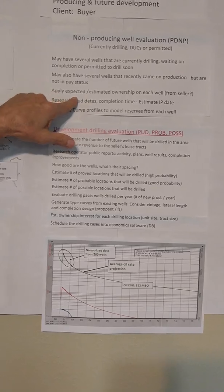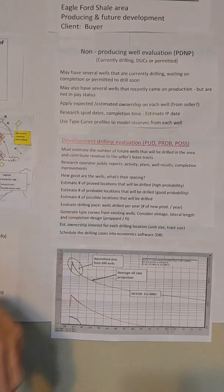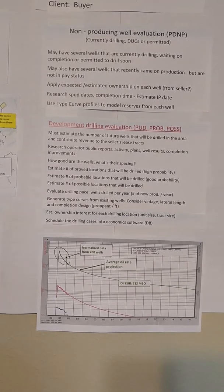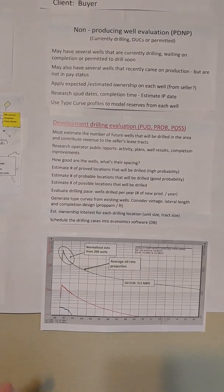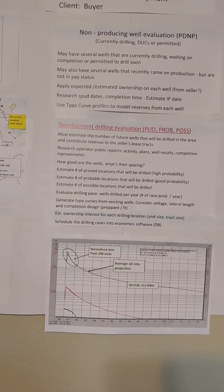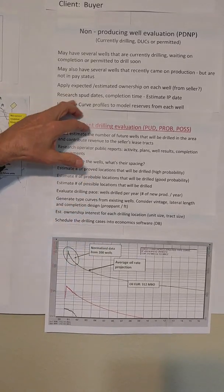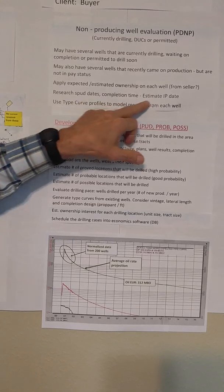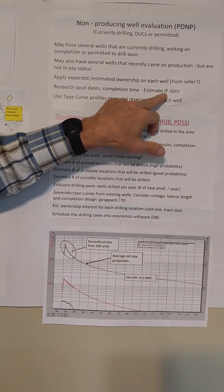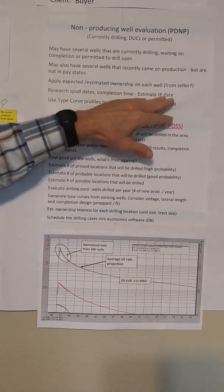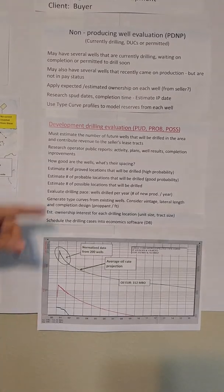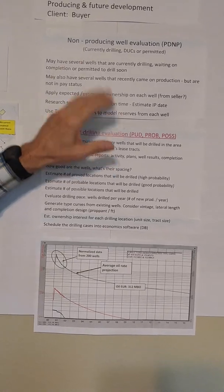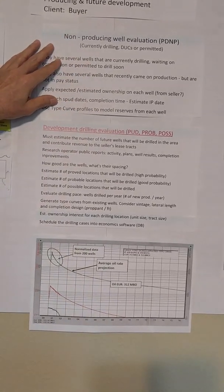We have to know the expected or estimated ownership of each of these new wells coming on. Usually the seller can give us information on that, or we can use the unit size, tract size, and the royalty on the tract. We can research spud dates and how long it takes to complete because we have to estimate the initial production date of all these new wells so we can project their reserves and cash flow. For each of these new wells with no history yet, we have to use a type curve, which we'll talk about later.